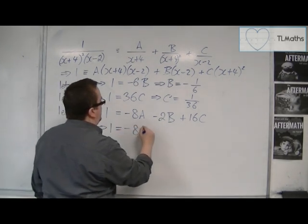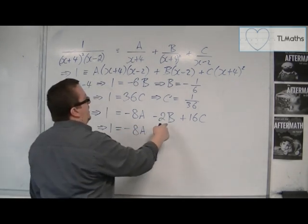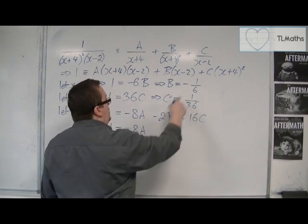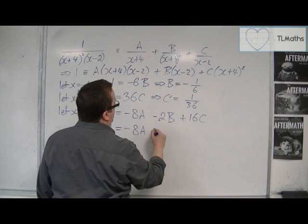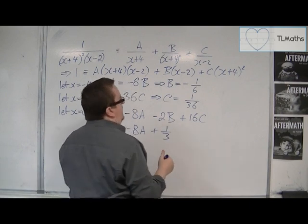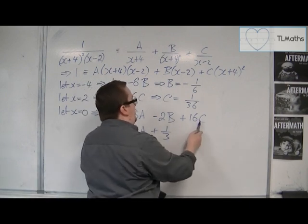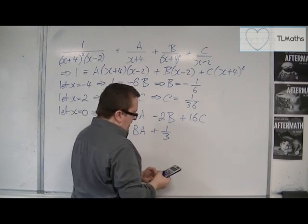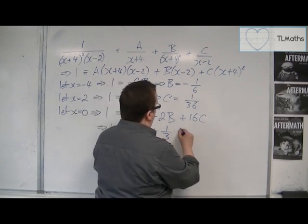So I've got 1 is equal to minus 8a. I don't know what a is, but I know that b is a sixth, or minus a sixth. So minus 2 times minus a sixth is 1 third. And then I've got 16 lots of 1 over 36. So 16 over 36 simplifies to 4 ninths.